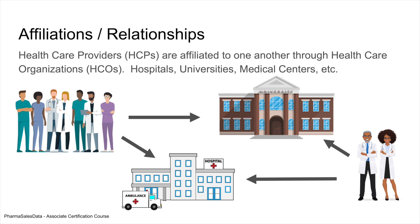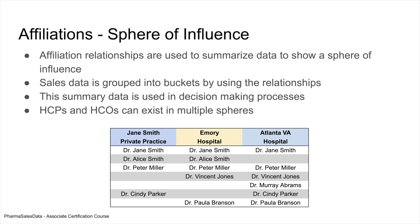Affiliations are basically relationships. Healthcare providers are affiliated to one another through healthcare organizations. You may have a group of healthcare providers affiliated with a university and a hospital, and other providers also affiliated with those same institutions — and due to this, they have relationships to one another. When you want to summarize your sales data and look at the sphere of influence these HCPs have, you want to see where they practice, who they practice with, and the relationships they have, because this helps drive sales through your pharmaceutical organization.